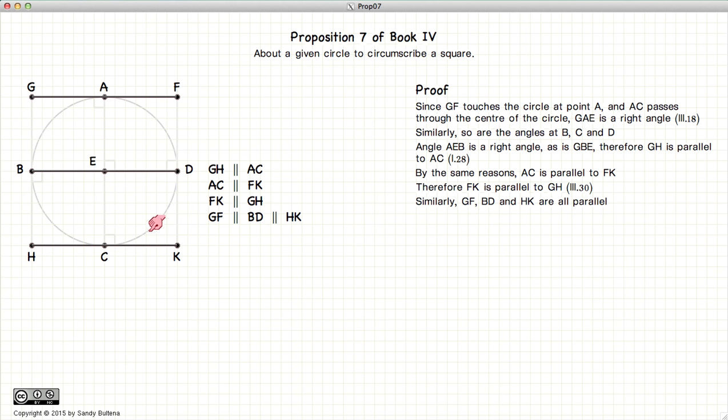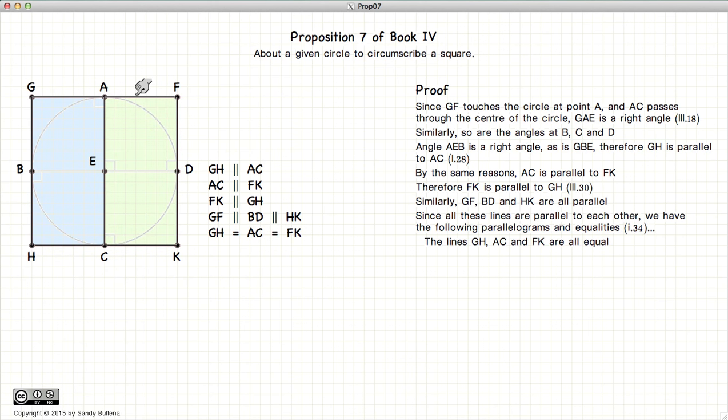Similarly, we can show that these three lines are mutually parallel and that HK is parallel to GF. Now since all these lines are parallel to each other, we have the following equalities.